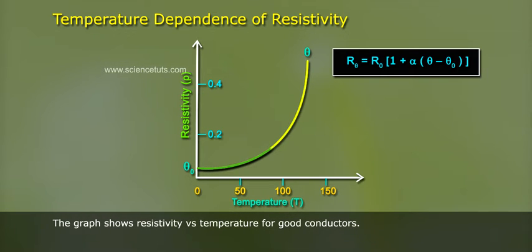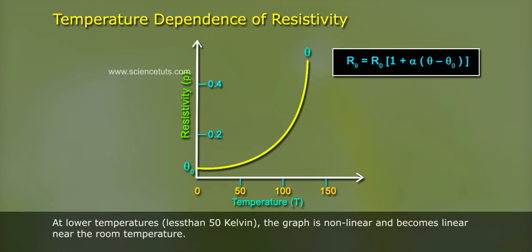The graph shows resistivity versus temperature for good conductors. At lower temperatures less than 50 Kelvin, the graph is nonlinear and becomes linear near room temperature. At higher temperatures it again becomes nonlinear.